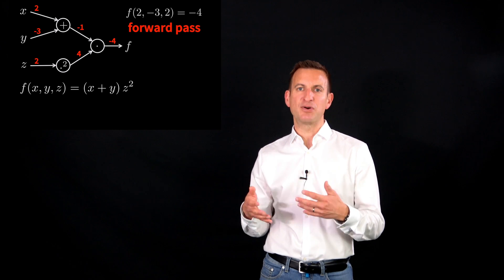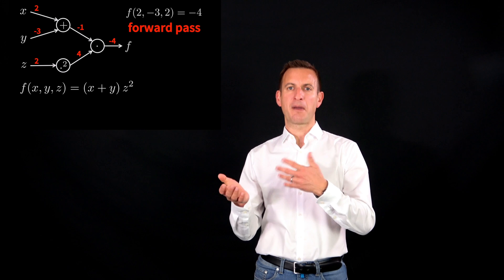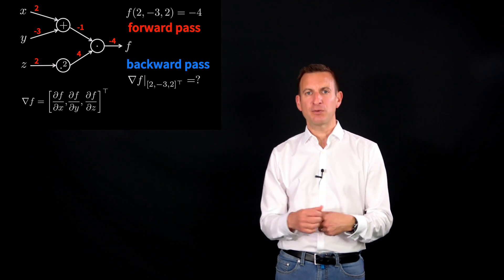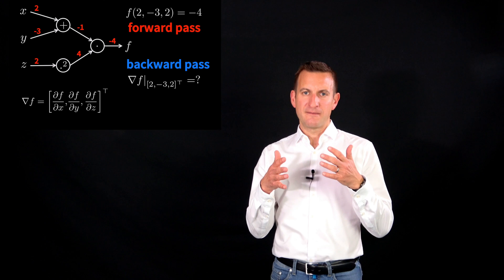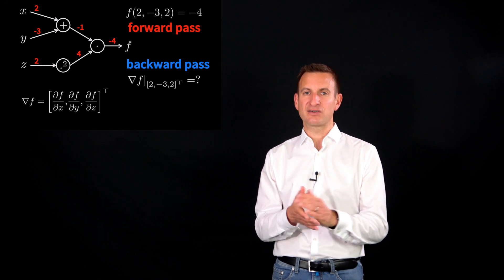And we are storing those red numbers as local variables in that graph because we will need it later on in the so-called backward path. And the backward path is used to compute the gradient for the position for which we have computed the forward path, so our linearization point.